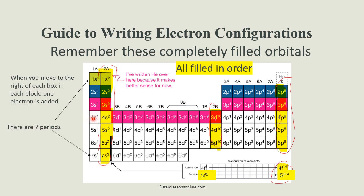Then start again with the fourth shell — the fourth period: 4S1, 4S2. Then for 3D, because the D block is one principal level less, we start from 3D1 and keep adding one electron per box up to 3D10, since D can hold a maximum of 10. Then again start for P with the 4th level: 4P1, 4P2, 4P3, up to 4P6.